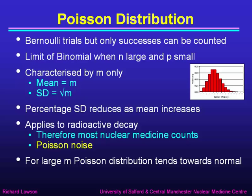The percentage standard deviation reduces as the mean increases. The Poisson distribution applies to lots of things, but in particular to radioactive decay, which makes it most important for nuclear medicine studies where we talk about Poisson noise — the random fluctuation in the number of counts. For a large mean value m, the Poisson distribution tends towards the normal distribution.